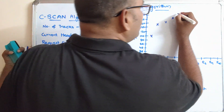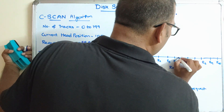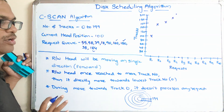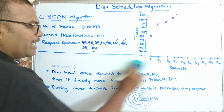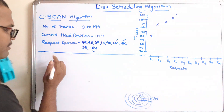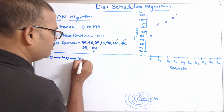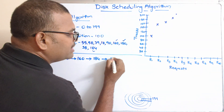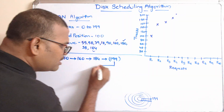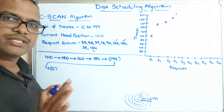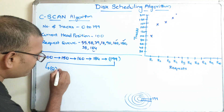Whenever it reaches 199, immediately it moves from 0. It will start with 0 and again start processing requests from there. 199 is not a request, but it reaches the maximum. So immediately the read-write head directly comes towards 0. 0 is also not a request, so it directly comes to 0. During this movement from 199 to 0, it doesn't process any request. From 0 it will start processing the requests.